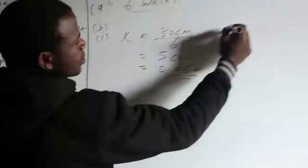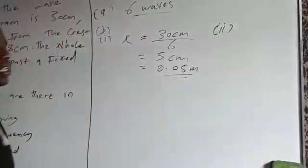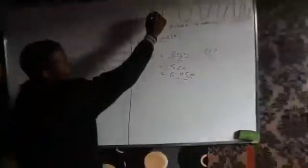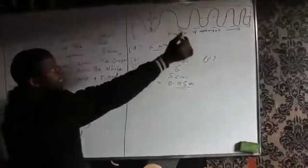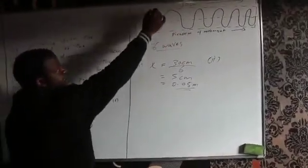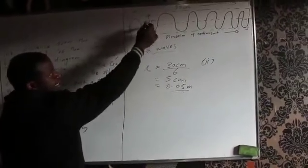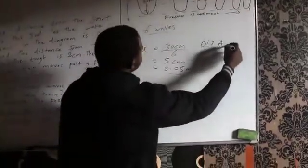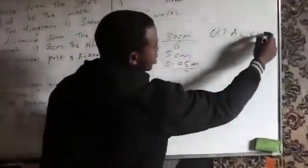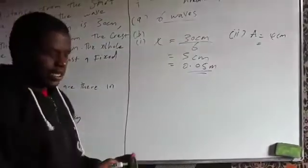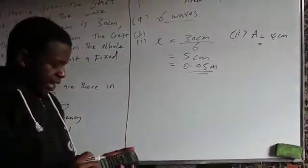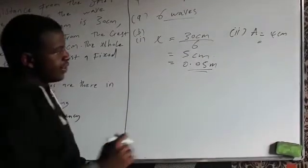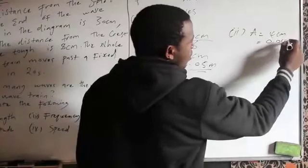Let us look at roman numeral 2, which is the amplitude. The amplitude is the distance from the equilibrium to the crest or trough. I know the distance from the trough to the crest is 8 centimetres, so the amplitude is half of that — 4 centimetres. Since amplitude is measured in metres, I divide 4 by 100, giving me 0.04 metres.